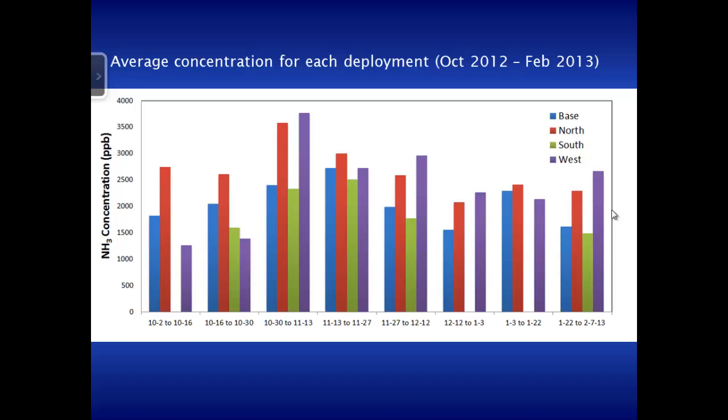The background concentration at this site is running about 15 to 20 ppb — if we had the background on the chart, you'd barely be able to see it. There's a lot of emissions coming off feedlots. Concentrations alone don't tell you a lot; we really need to convert these into emissions.